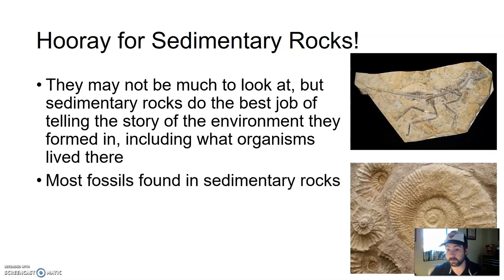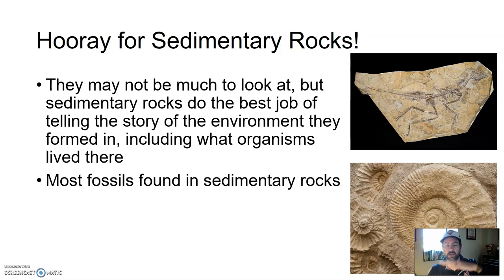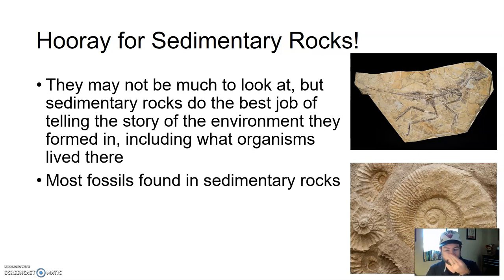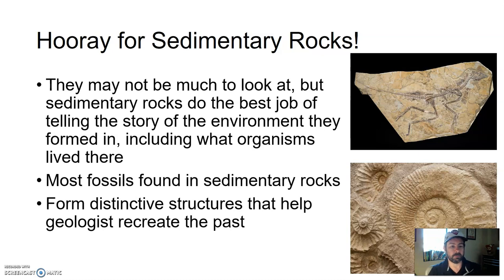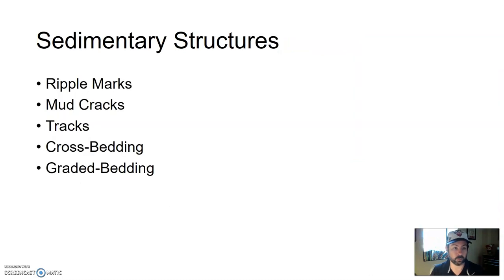Most fossils are found in sedimentary rocks. As organisms died, they were covered with sediment, and over time as that sediment turned to sedimentary rock it preserved — somehow, some way — a fossil of that material. A fossil can be the actual material itself or just an imprint of material that has decayed away. There are many types of fossils, and they also form distinctive structures that help a geologist recreate the past climate and what an area was like.